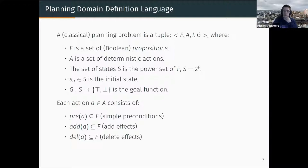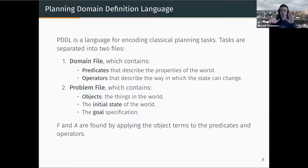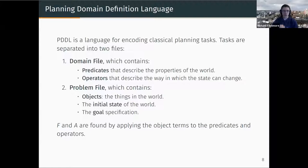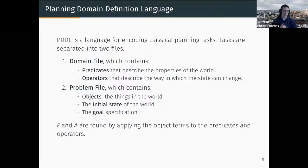In PDDL, problems are written into two files: the domain file and the problem file. The domain file includes the predicates and operators of the problem. The problem file includes the objects, the initial state, and the goal. Importantly, whereas the definition uses propositional facts and actions, in the domain file you write this in the first-order logic of predicates and operators. Predicates take in some parameters — objects — and applying those terms to the predicates generates all of your facts and all of your actions.